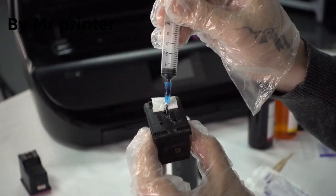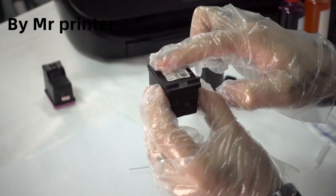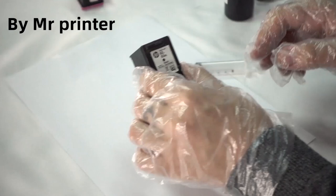And after you've done that, what you need to do is seal it with the sticker. It's very important. Then you put it down for 10 minutes because the sponge has to absorb the ink.